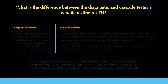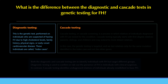What is the difference between diagnostic and cascade testing in genetic testing for FH? Diagnostic testing is the genetic test performed on individuals suspected of having FH due to high cholesterol levels, family history, physical signs, or early-onset cardiovascular disease. These individuals are called index cases.